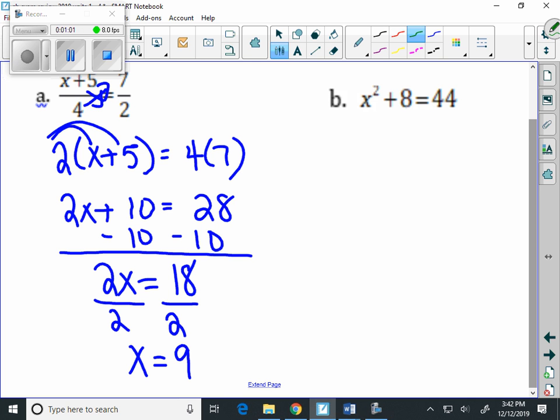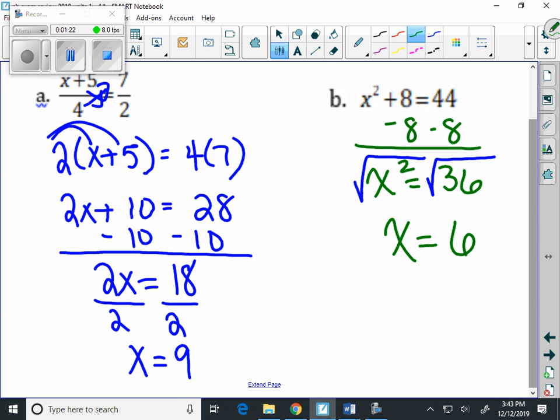Solving an equation over here on letter B. When we solve this one, we're going to subtract 8 from both sides. And we get X squared equals 36. When we have this squared, we have to take the square root of both sides. And when we take the square root of both sides, we get X equals 6.